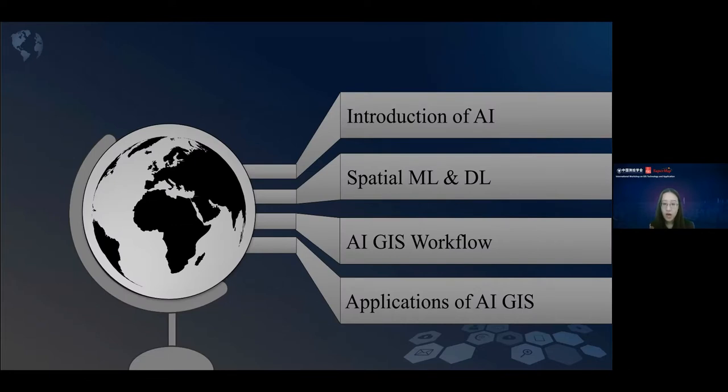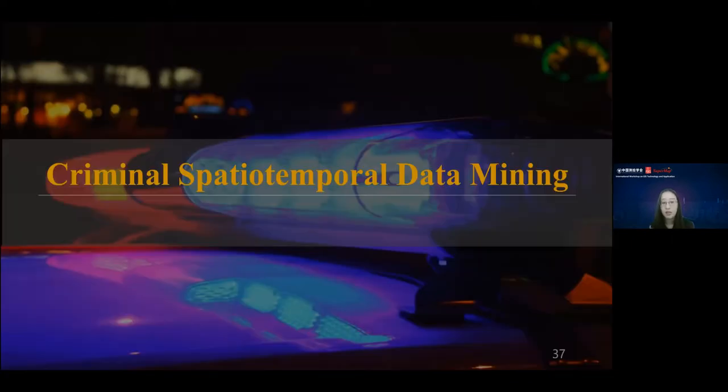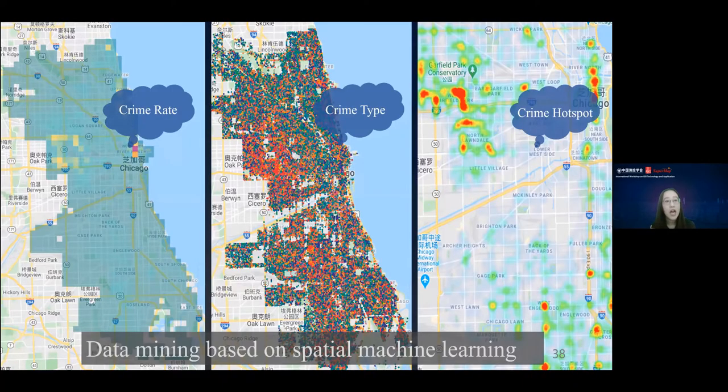My last part is the applications of AI GIS. At this part, let's see how AI GIS can help in real projects. The first one is criminal spatial temporal data mining. We all know that crime has obvious spatial and temporal patterns, and AI will become an effective way of crime prevention. For example, with the help of spatial machine learning, we can calculate the crime rate to know the crime type and identify the crime hotspot area.